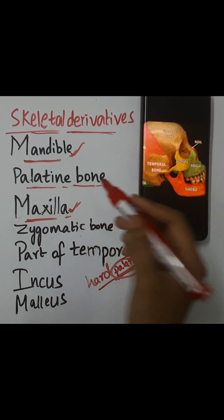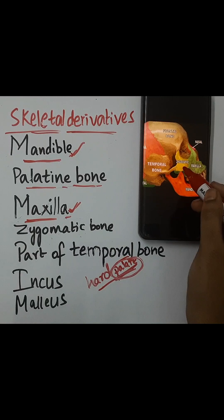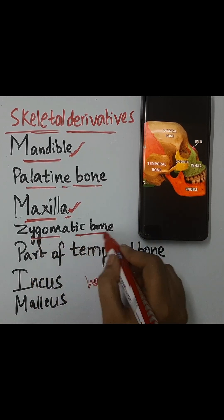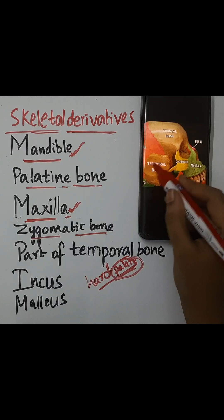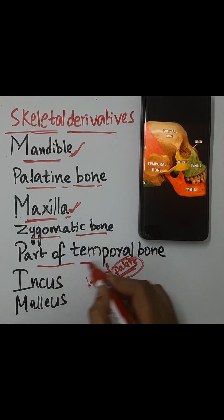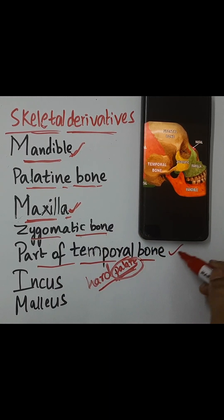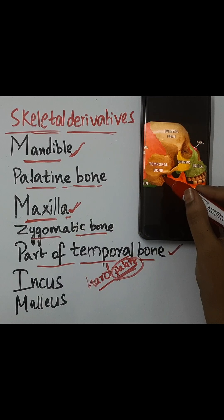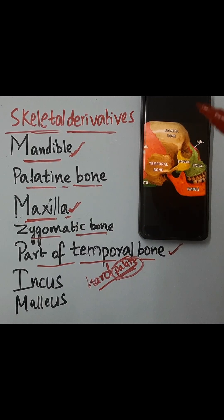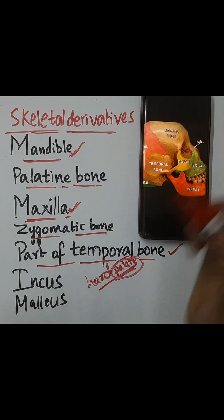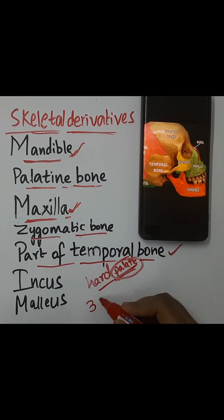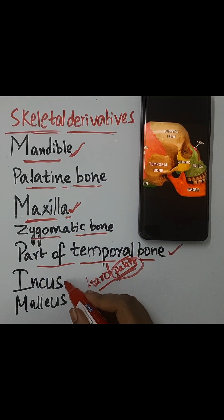Besides the maxilla you can see the zygomatic bone. Next you can see the temporal bone — a part of temporal bone is derived from the 1st pharyngeal arch. You can see here the opening of the external auditory canal. If you go medial to it there is the tympanic membrane, and still more medial is the middle ear, which has 3 ear ossicles. Write 2 of them: incus and malleus.